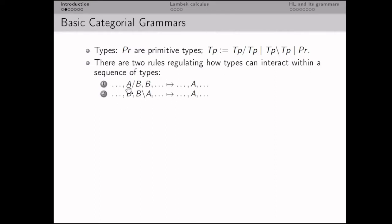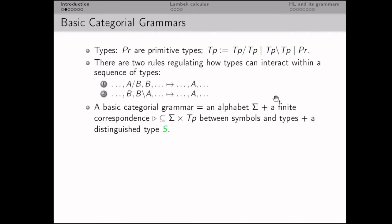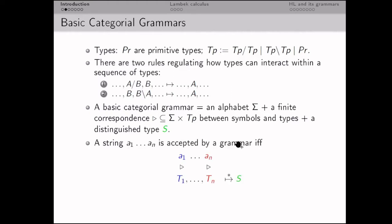These rules can be called reduction laws because they say that given A division B and B, they can be reduced to A — in this order and in the other order. A basic categorical grammar contains an alphabet, a correspondence between symbols of the alphabet and types (assigning one or several types to each symbol), and a distinguished type S. A string is accepted if we can replace each symbol by a corresponding type and reduce the resulting sequence to the distinguished type S.